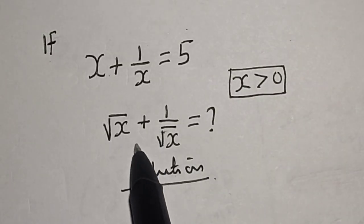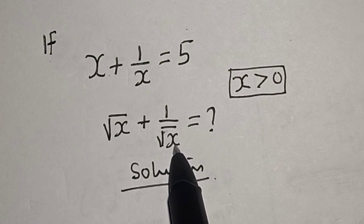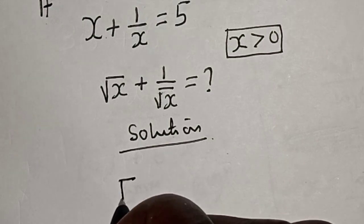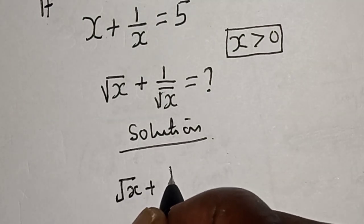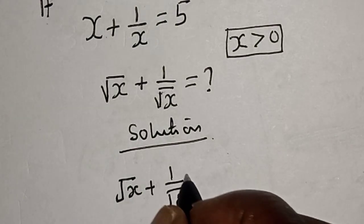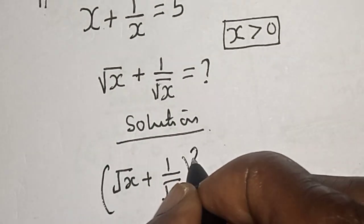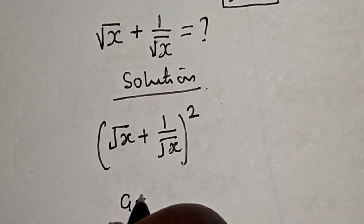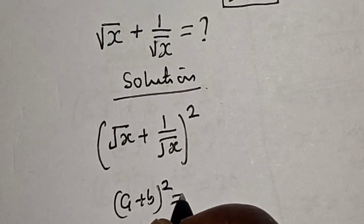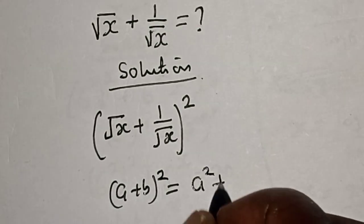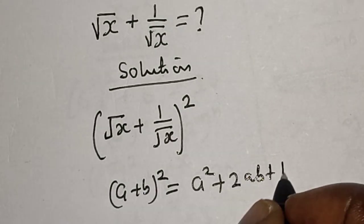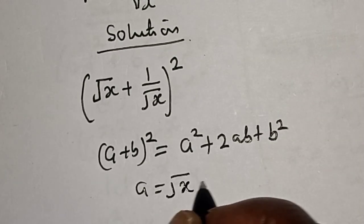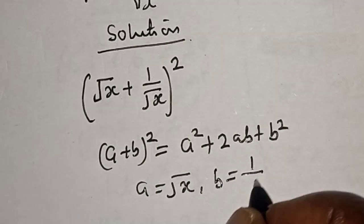Now let's work with square root of s plus 1 divided by square root of s. Let's square this expression: we have (square root of s plus 1 divided by square root of s) squared. Remember the exponential rule that (a + b)² equals a² plus 2ab plus b², where a equals square root of s and b equals 1 divided by square root of s.